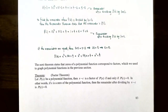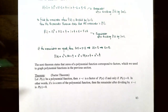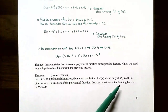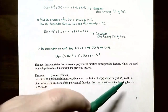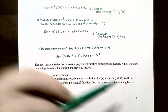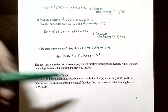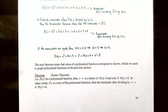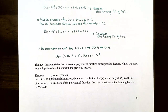The factor theorem states: let P(x) be a polynomial function. Then x - c is a factor of P(x) if and only if P(c) = 0. In other words, if x = c is a zero of the polynomial (the y-value is 0, meaning x = c is an x-intercept), then x - c is a factor. Equivalently, if the remainder after dividing by x - c is 0, the binomial goes into the polynomial evenly, so it is a factor.